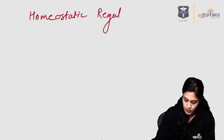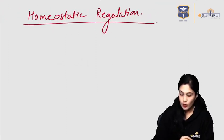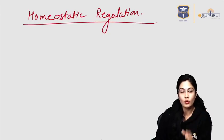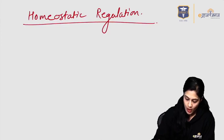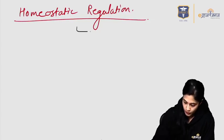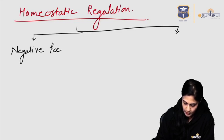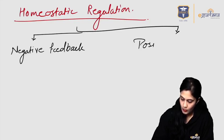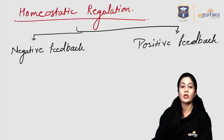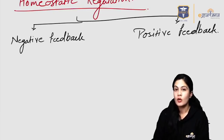Homeostatic regulation is a concept you should know well, as both long and short notes are often asked on this topic. There are two different mechanisms for homeostatic regulation in the body: the negative feedback mechanism, which is very common, and the positive feedback mechanism. The negative feedback mechanism is the major mechanism working throughout the body in virtually every system.